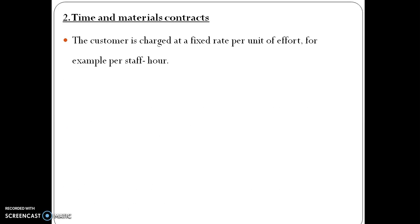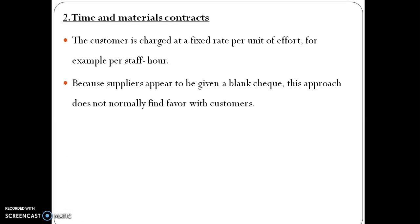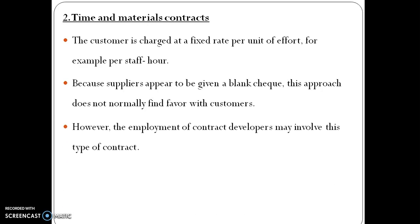In a time and materials contract, the customer is charged at a fixed rate per unit of effort — for example, per hour. Because the supplier appears to be given a blank check, this approach does not normally find favor with customers; however, employment of contract developers may involve this type of contract.